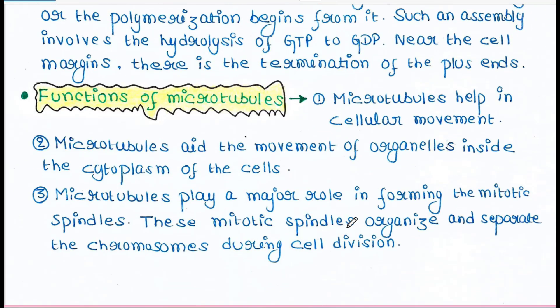Let's talk about the functions of microtubules. Microtubules help in cellular movement. In fact, cilia and flagella are structures made up of microtubules only. Microtubules aid the movement of organelles inside the cytoplasm of the cells. And microtubules play a major role in forming the mitotic spindles. These mitotic spindles organize and separate the chromosomes during cell division. That is the most important event of the cell division process.